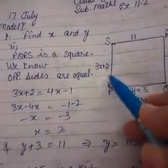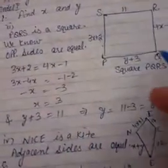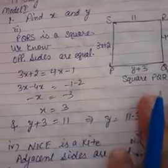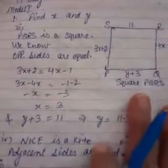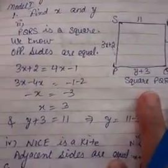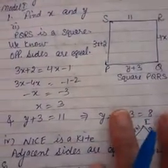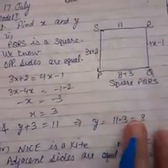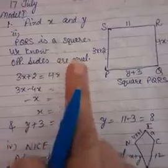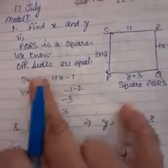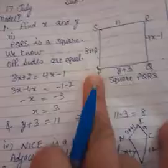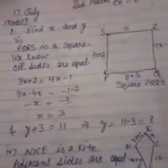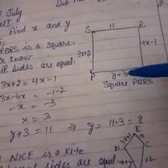PQ ki value is y plus 3, QR is 4x minus 1, RS is 11, and PS is 3x plus 2. We need to find the value of x and y. How will we do this? In the previous lecture, I explained the properties of parallelogram, rectangle, square, and rhombus. We'll apply those same properties here. The square's sides are given and we need to find x and y. Which property will apply here? Opposite sides are equal.